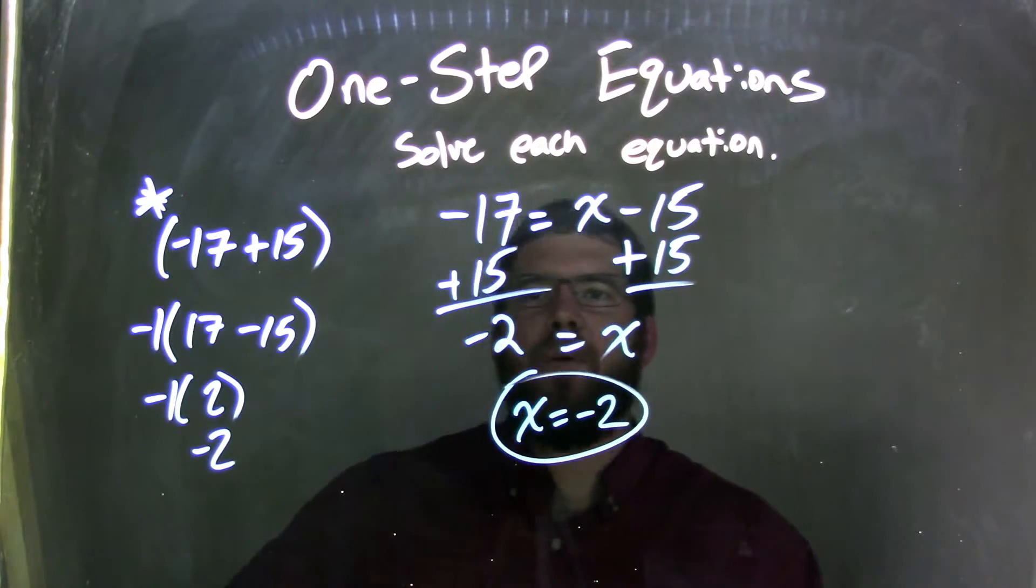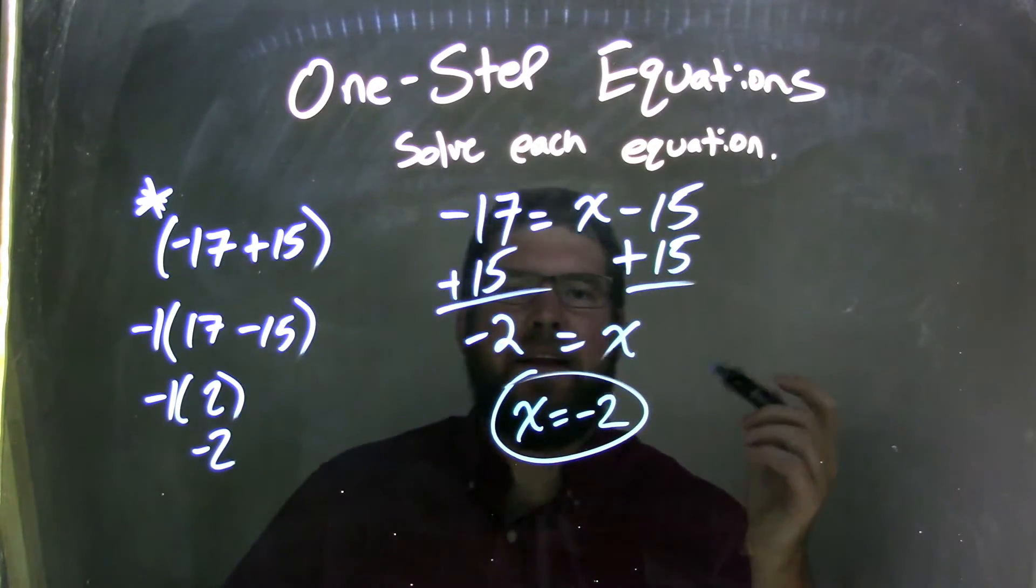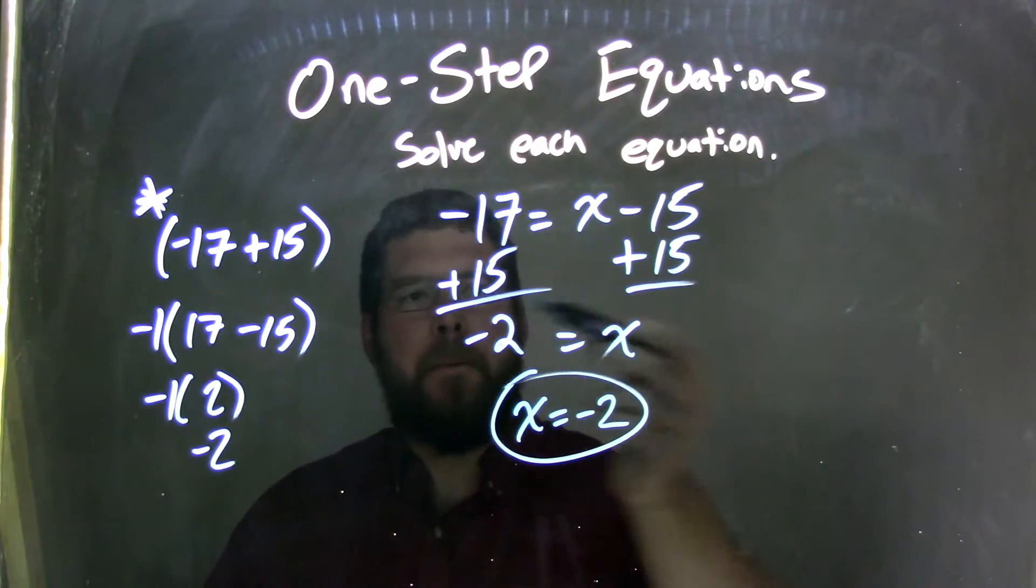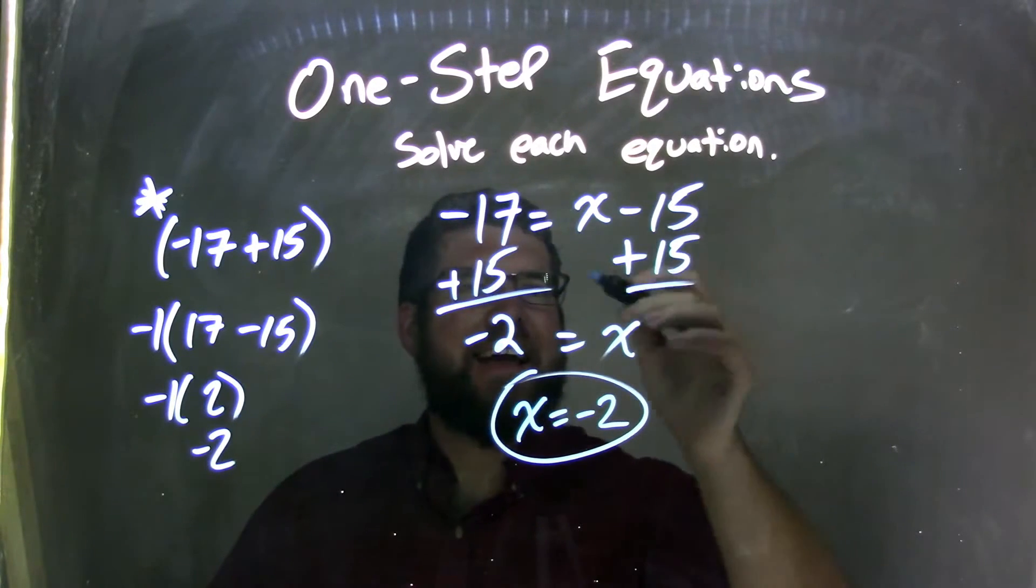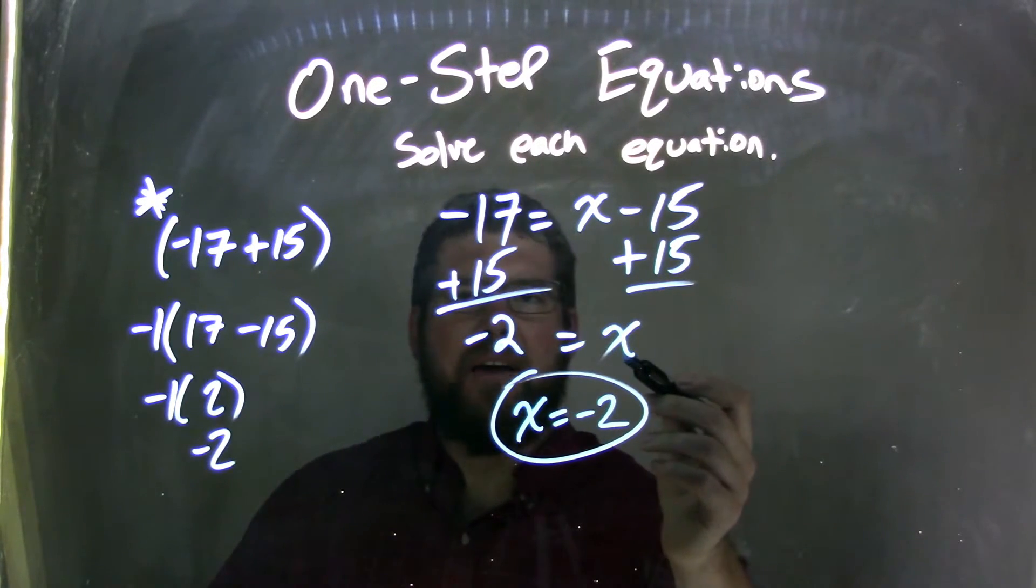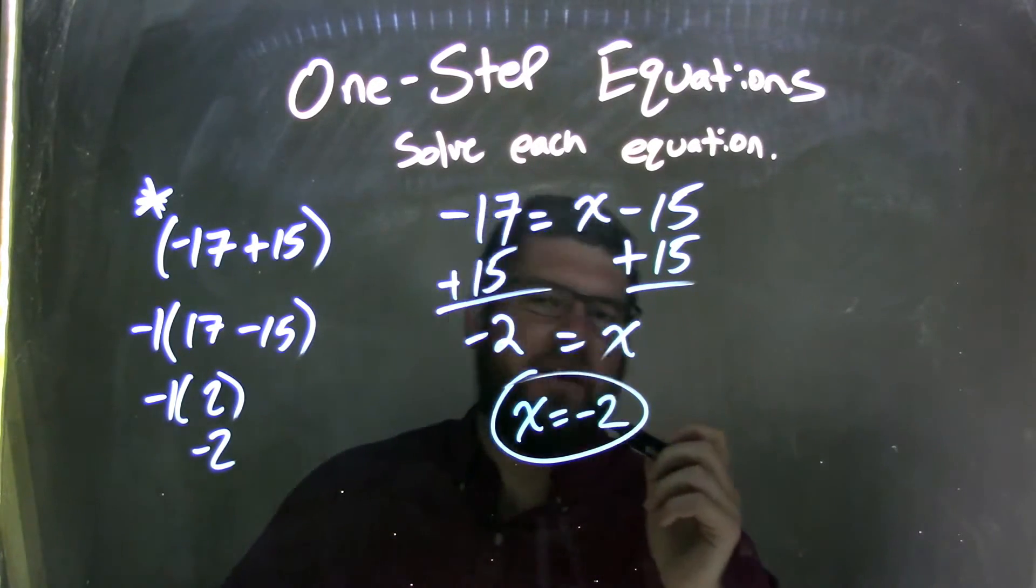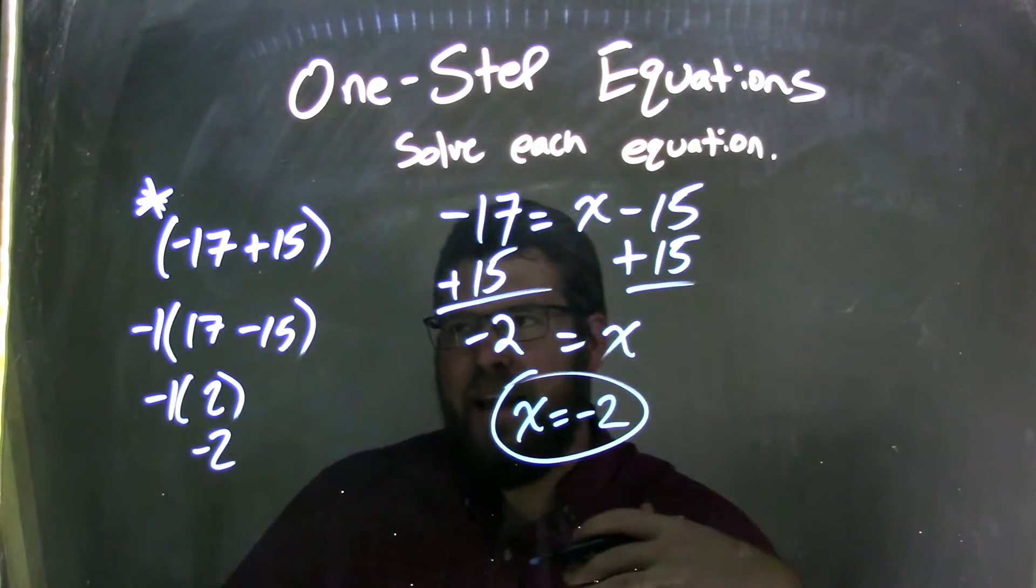So let's recap. We started with negative 17 equals x minus 15. Opposite of subtraction is addition. Added 15 to both sides. Canceled out the 15s here, I'm left with just x. Negative 17 plus 15, I knew that was going to be negative 2.